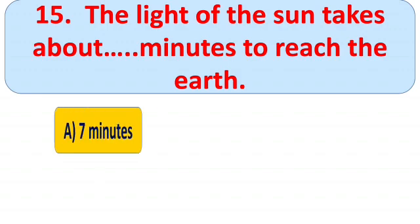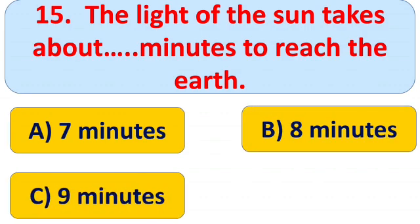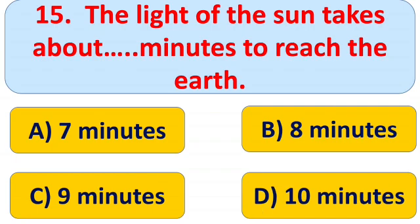Question number fifteen: the light of the sun takes about blank minutes to reach the Earth. Options: A) seven minutes, B) eight minutes, C) nine minutes, and D) ten minutes. The right answer is B) approximately eight minutes. I hope you children tried to give the answers. Keep practicing — I'll be back with a new topic. Till then, stay safe and stay with my channel. Bye children!